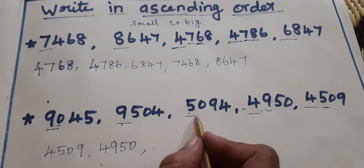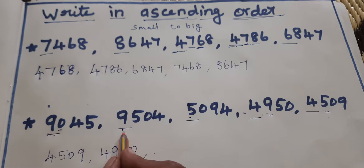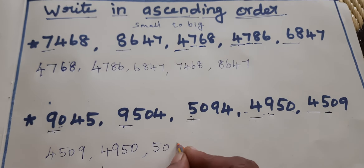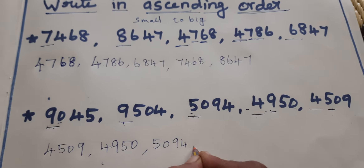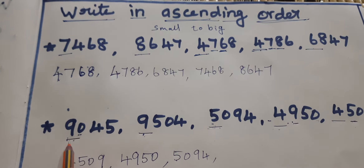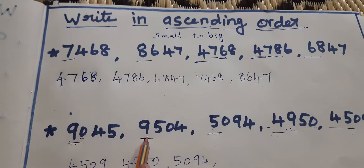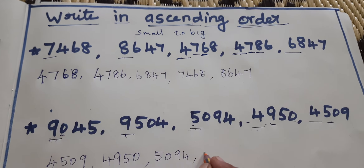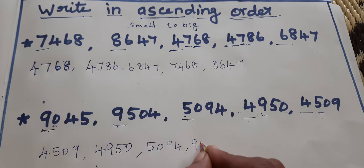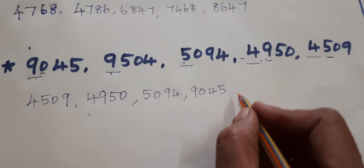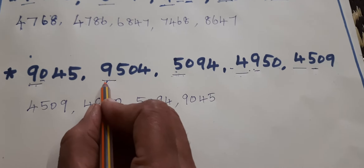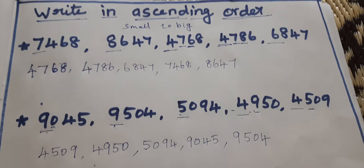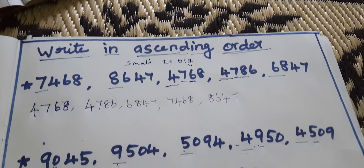Next, which one is the small number? 9000 and 9000, 5000 and 5000 — 5 is the smallest. So 9504 comes next. Then 9000 and 9000 — both the same. Second digit: 0 is the smallest. So 9045 is next, then last one is 9504. Ascending order: small to big.